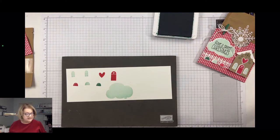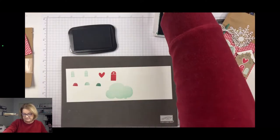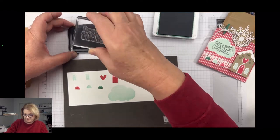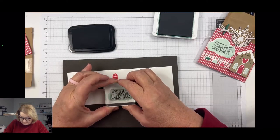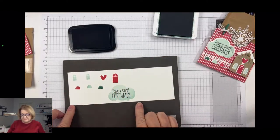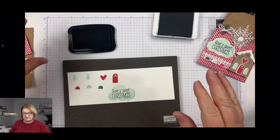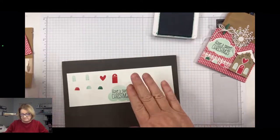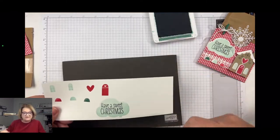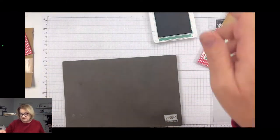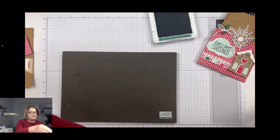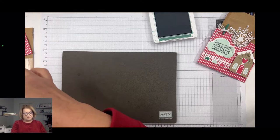And I am going to take the memento black ink and add my sentiment right over that little word bubble. Okay, now we would take all the coordinating dies and cut that all out, which I have already done, so you don't have to watch me do all that. But by doing it all in one mighty swoop, we only have to run it through once instead of several times for each of those elements.